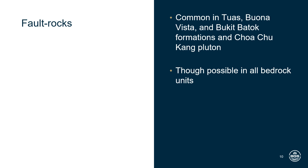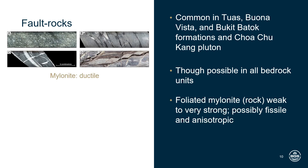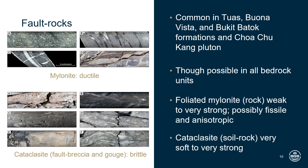Fault rocks include both highly foliated mylonite, produced by ductile deformation, and unfoliated cataclasite, produced by brittle deformation. Mylonite in an unweathered state is always a rock in the rock mechanics sense and can be extremely strong, although it may exhibit a high degree of strength anisotropy and fissility depending on how well developed the foliation is. Cataclasite, which includes fault breccia and gouge, can occur as very soft to very stiff soil, or as rock with a significant range in strength.